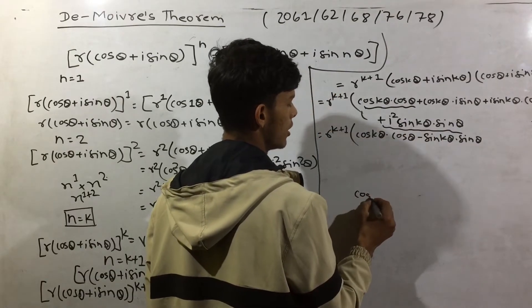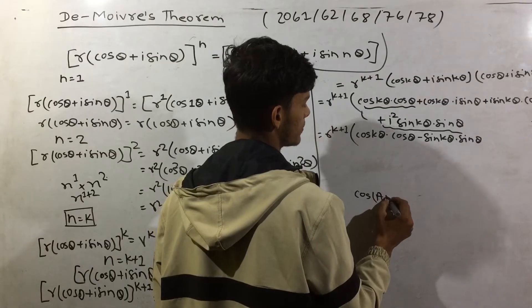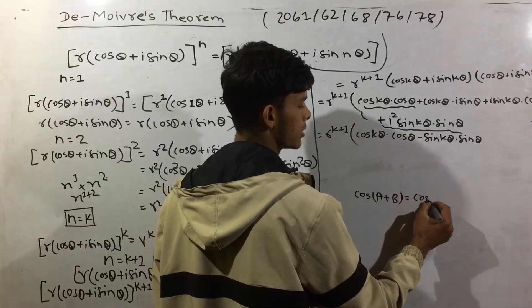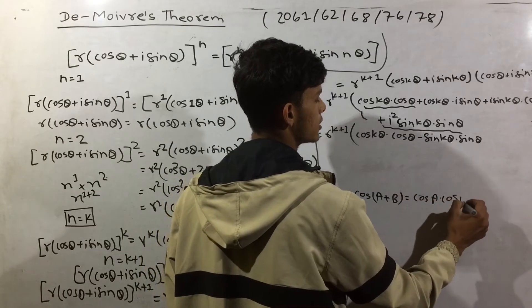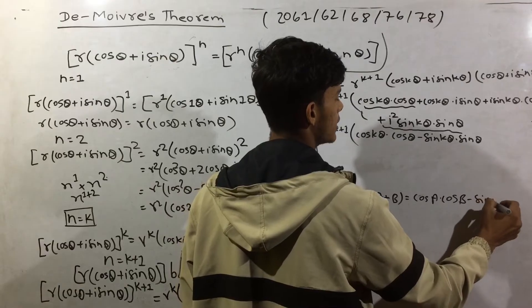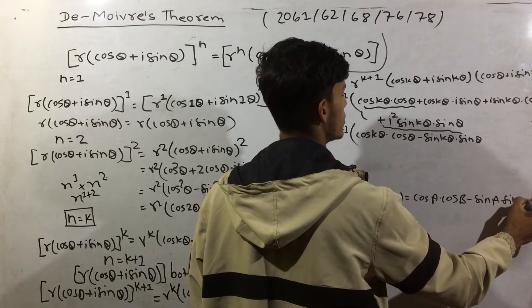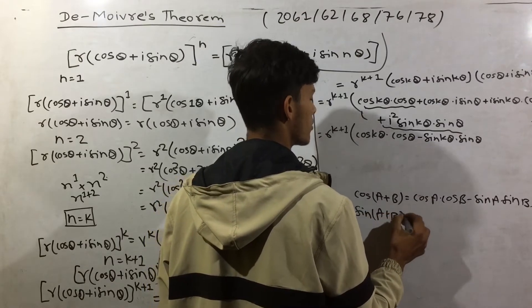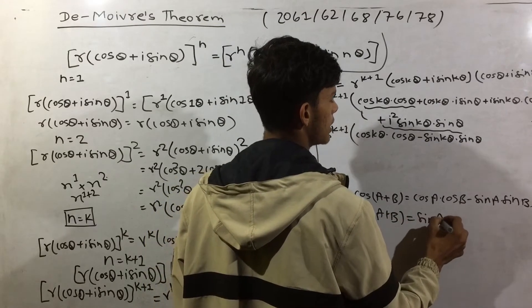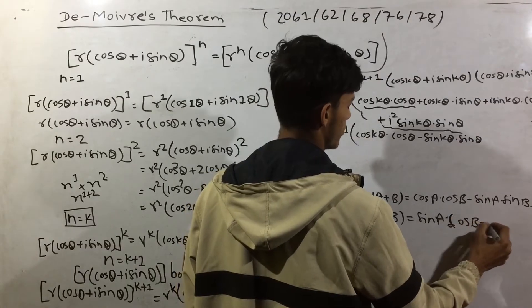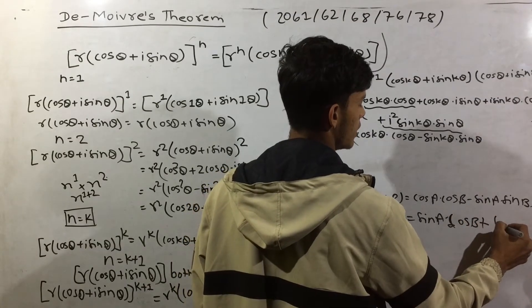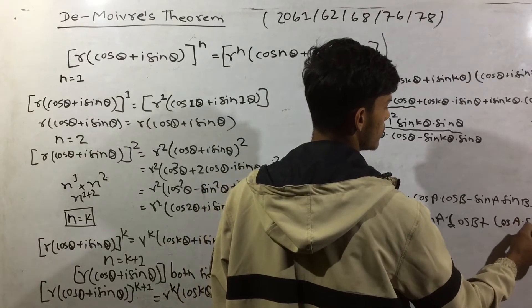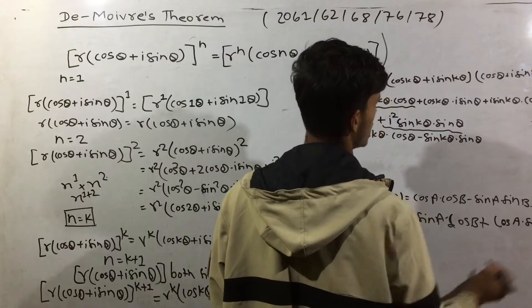Using the cos(a plus b) formula: cos a into cos b minus sin a into sin b. And the sin(a plus b) formula: sin a into cos b plus cos a into sin b.